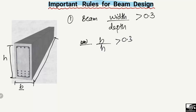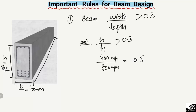For example, if the beam width is 400 mm and the height or depth of the beam is 800 mm, the width-to-depth ratio is 400 divided by 800, which equals 0.5. Since 0.5 is greater than 0.3, this condition is satisfied. So the first rule is that beam width to depth ratio should always be greater than 0.3.